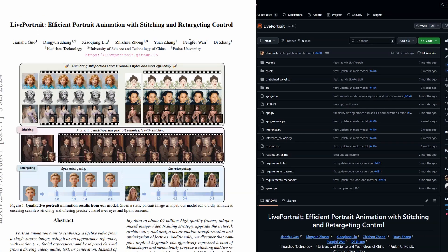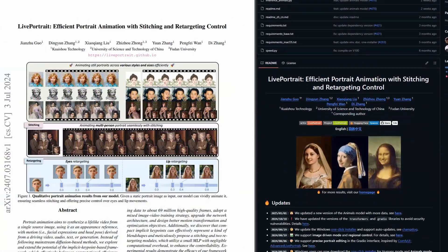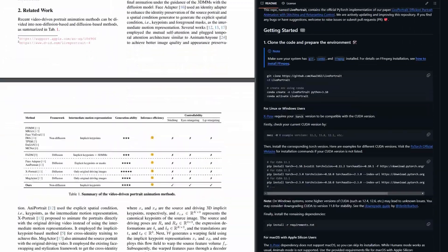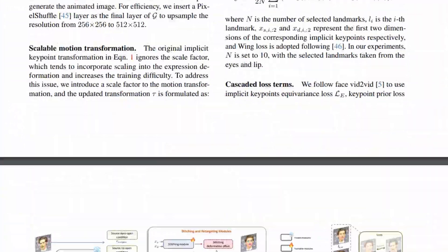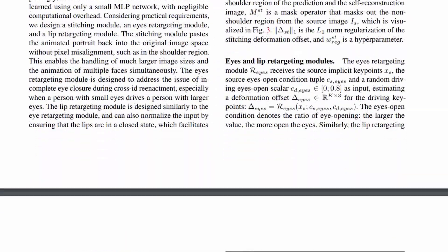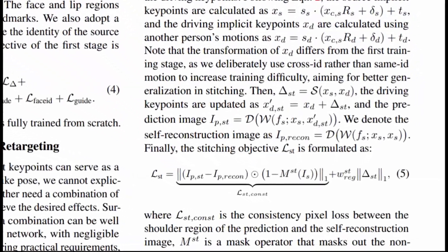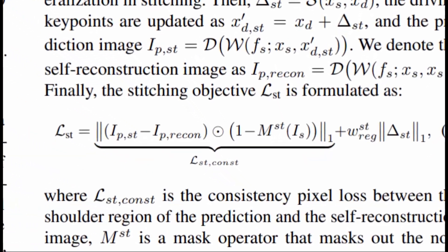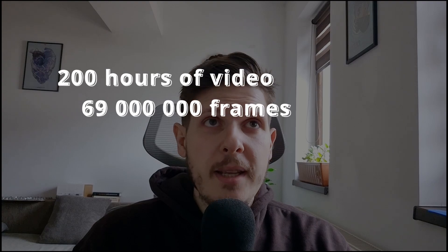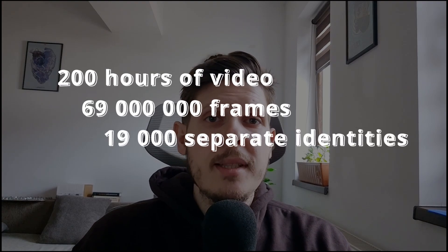Whenever we work with an open-source, publicly available AI model, there is a paper about it and code available on GitHub, usually written in Python. Live Portrait consists of several steps, some of which are neural networks. To train everything, they use 200 hours of video, meaning 69 million frames of almost 19,000 separate persons.